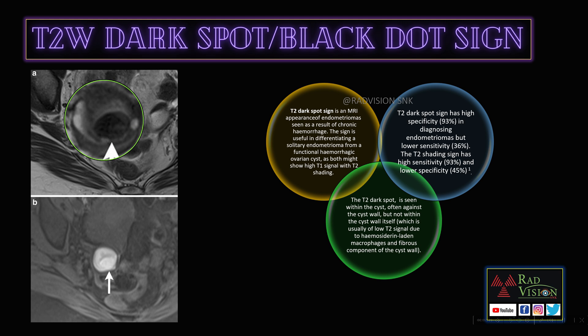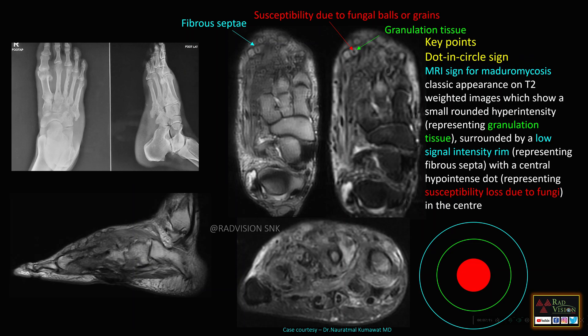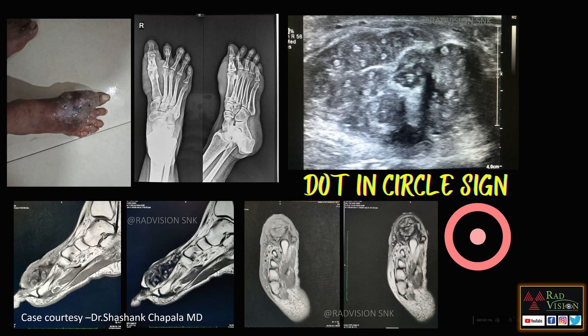T2 dark spot sign has high specificity in diagnosing endometriomas but low sensitivity, whereas the T2 shading sign has high sensitivity and low specificity. Remember: T2 dark spot sign or black dot sign in case of endometrioma.